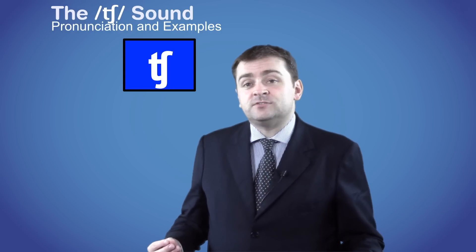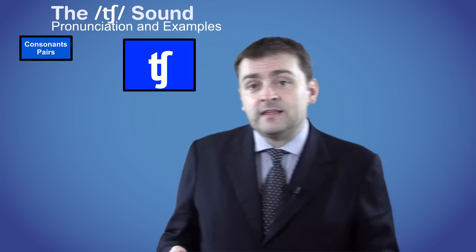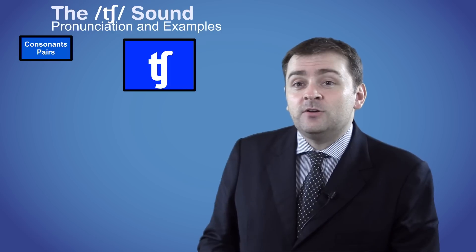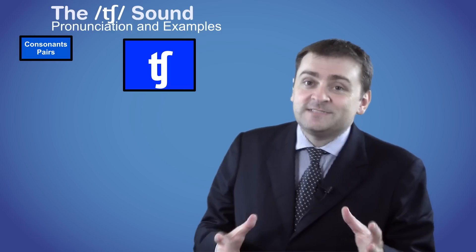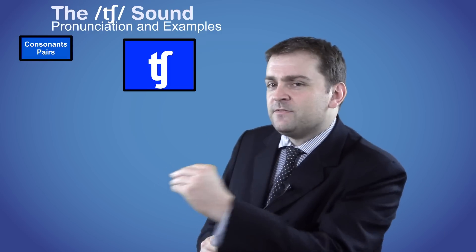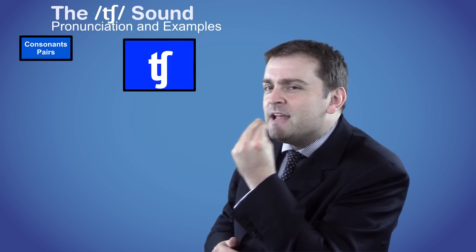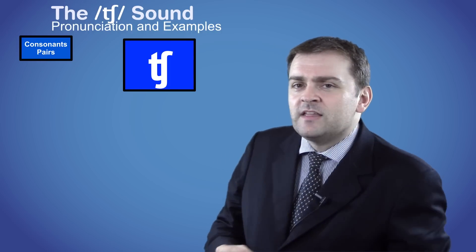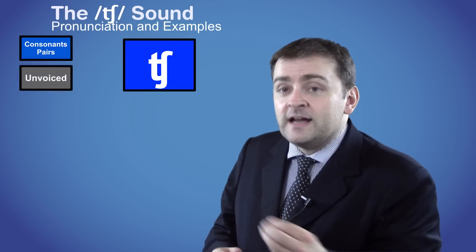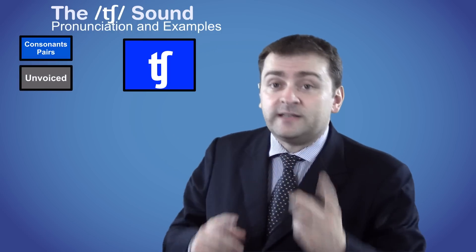The ch sound is from the consonant pairs group and is called the voiceless paletalveolar africate. This means that you create friction by first stopping the airflow with your tongue at the ridge behind your teeth then releasing it through a narrow gap. The ch sound is made through the mouth and is unvoiced which means that you don't use your vocal cords to make the sound.